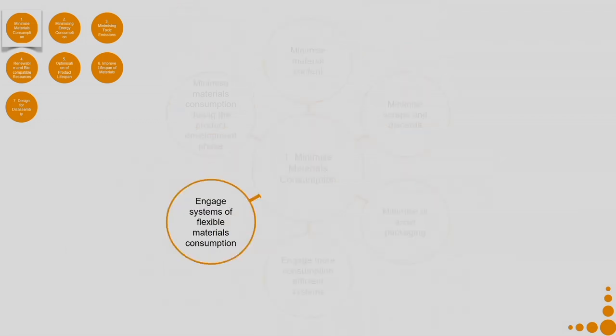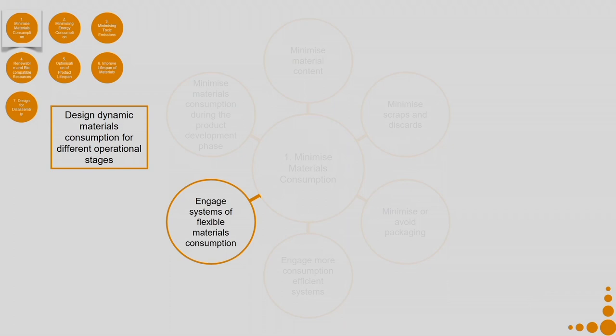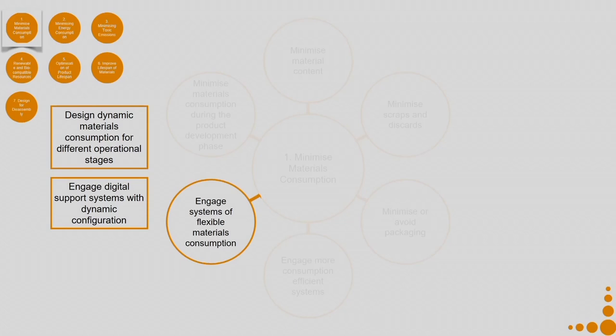Engage systems of flexible material consumption. Design dynamic material consumption for different operational stages. For example, the context of different quality of clean water for drinking, washing utensils, washing clothes, and bathing. Depending on what consumption is happening, you optimize your product delivery accordingly. Engage digital support systems with dynamic configuration — digital settings can help minimize material consumption rather than manual or mechanical settings.